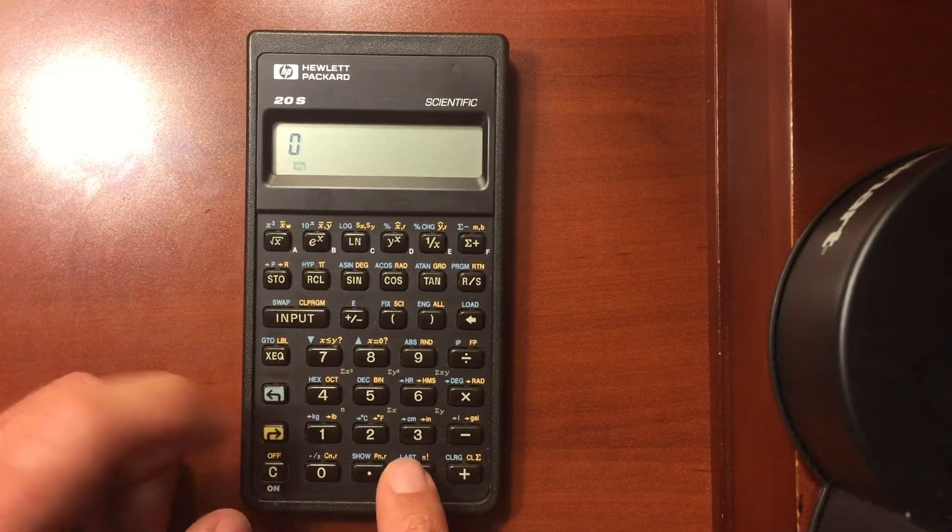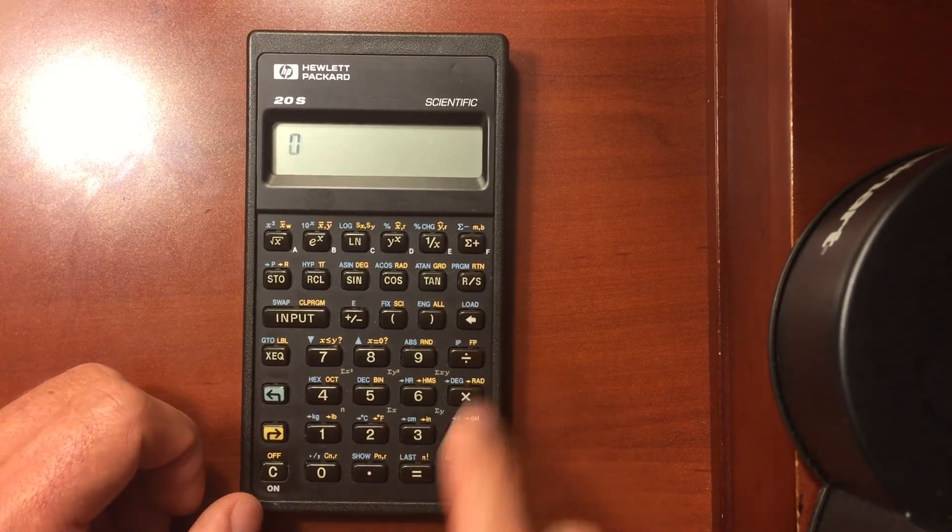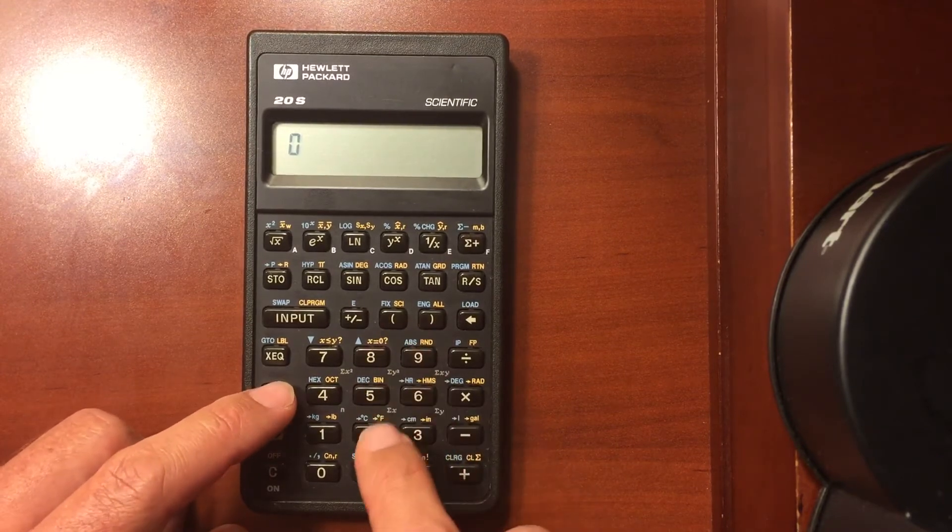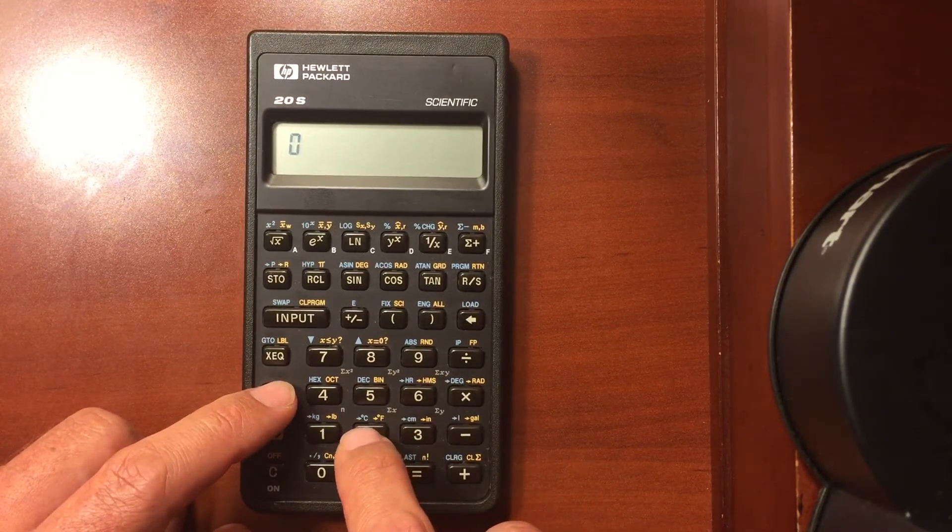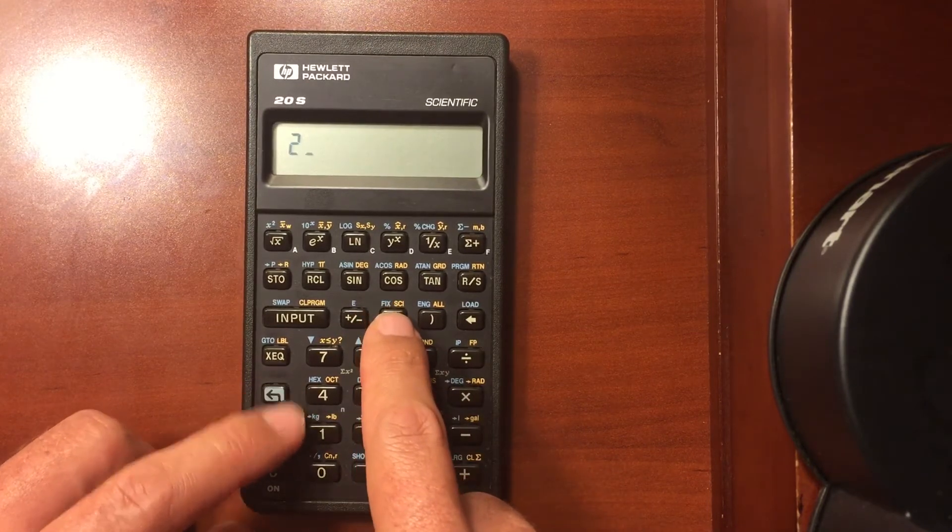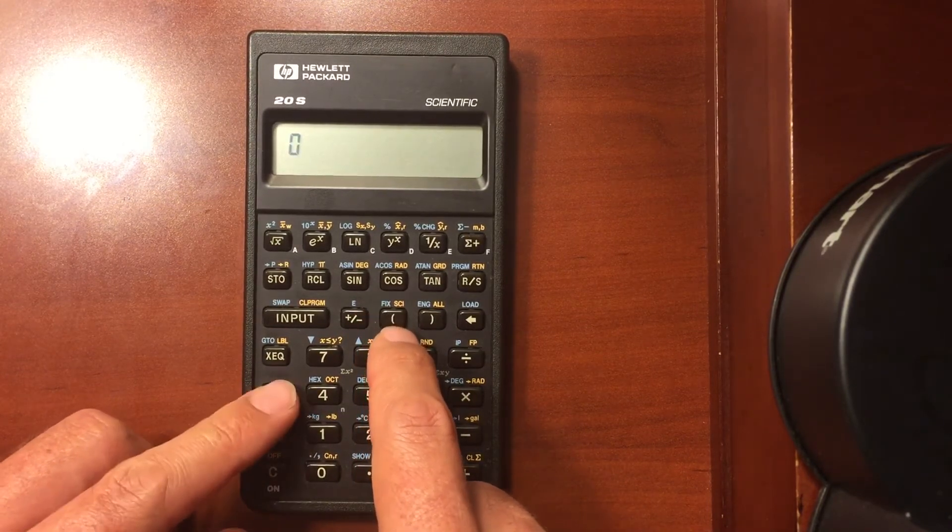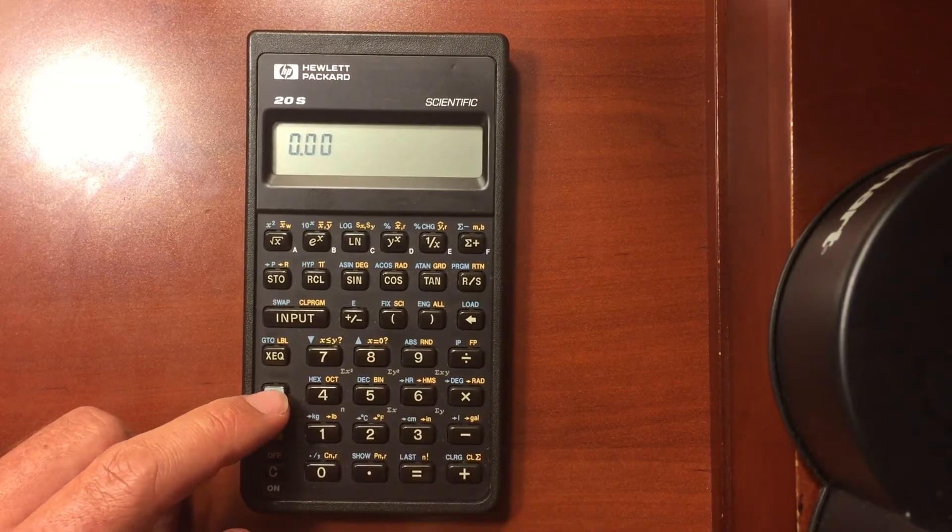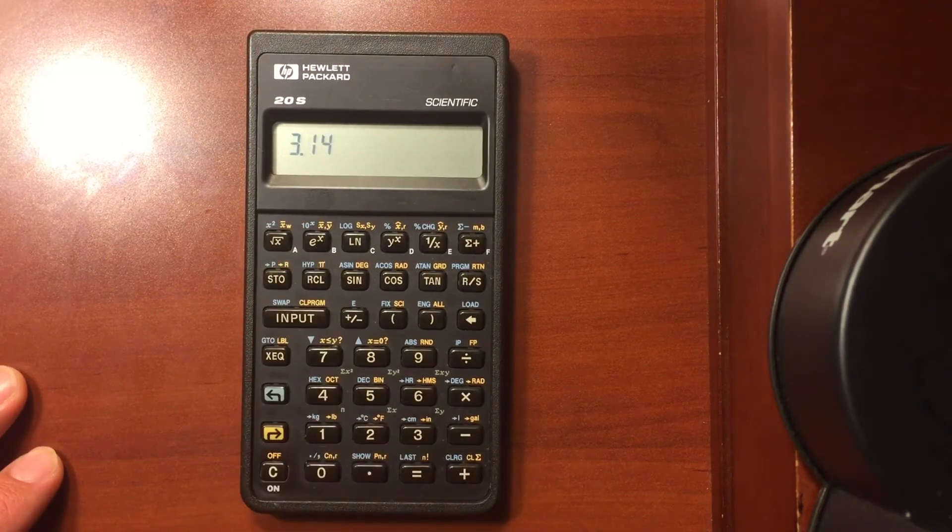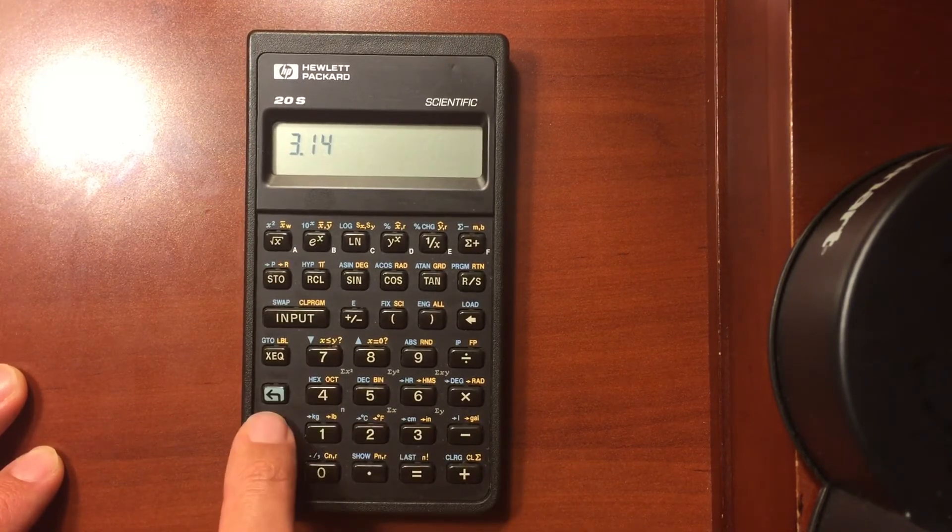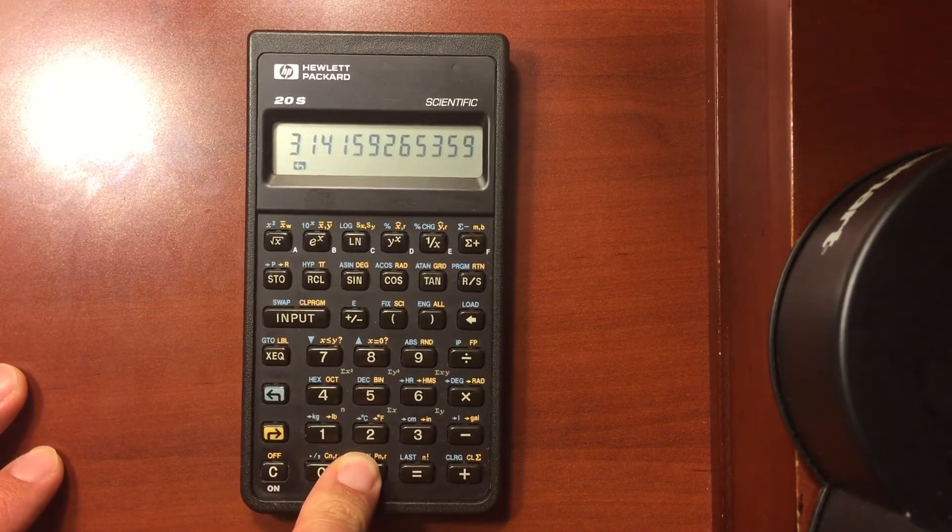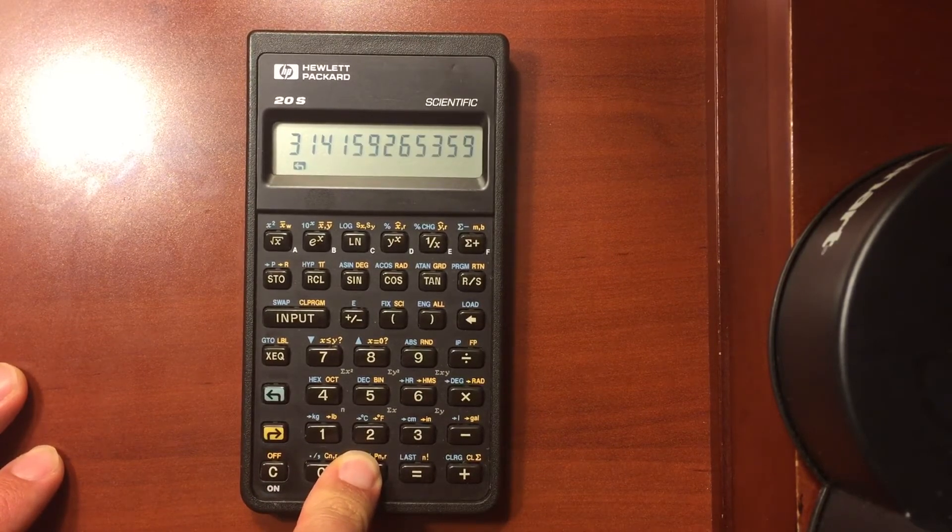You've got your factorial. Last will show you the last number that you entered. Show will show you all digits. So, for example, if I fix it to two digits. Fix two. There. So I have my display fixed to two digits, and I enter in PI. Now it'll only show me two digits of PI, but if I hit show, that will give me all of the digits that are actually stored in the calculator memory.